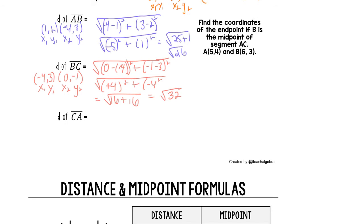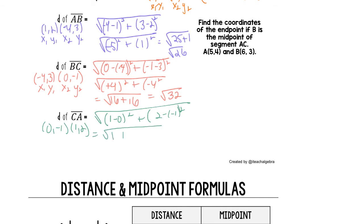The last distance pair is line segment CA. Our points are (0, -1) and (1, 2). The distance is the square root of the difference in X's: one minus zero squared, plus the difference in Y's: two minus negative one squared. That's the square root of 1 squared plus 3 squared, which is the square root of 1 plus 9, or the square root of 10.